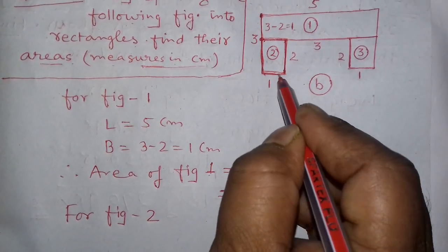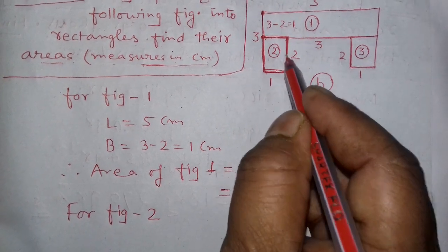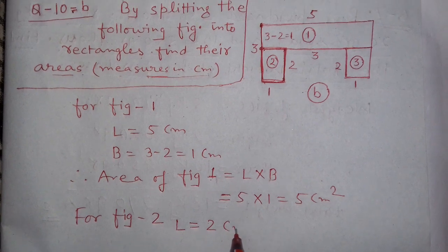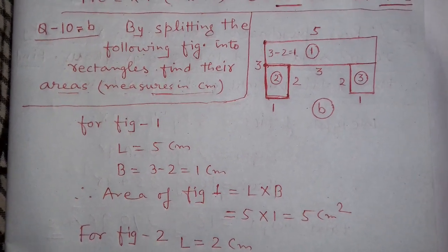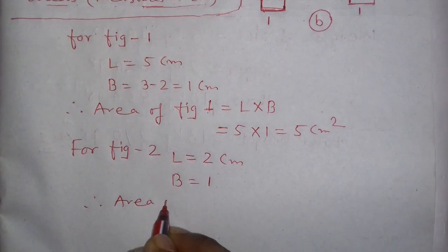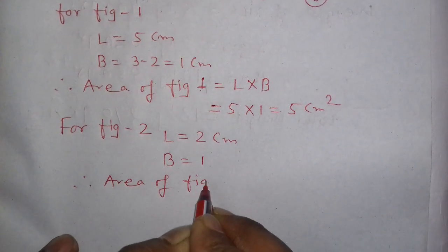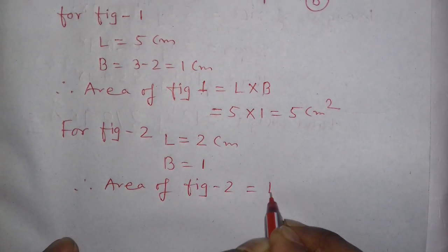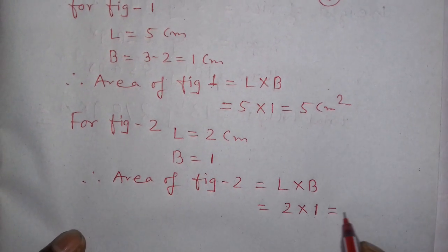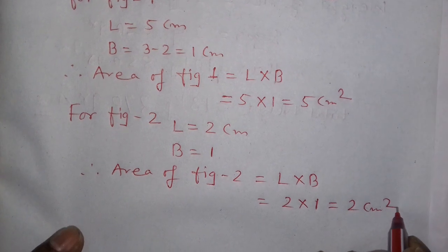So how much length is given to you? Length is given to you 2 centimeters, and breadth is given to you 1 centimeter. Therefore, area of figure number 2 is equal to L multiply B. So L's value is 2 into 1, that is 2 centimeter square.